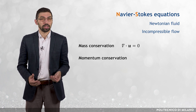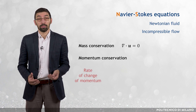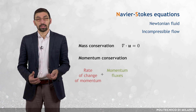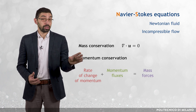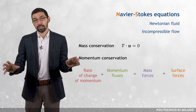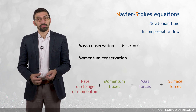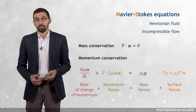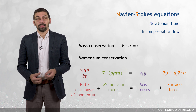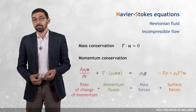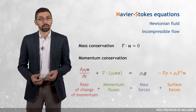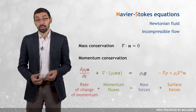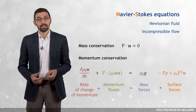The momentum conservation equation states that the time rate of change of momentum of a small fluid element plus the momentum fluxes through its faces are balanced by the forces acting on it, which divide into mass forces — in practice the gravitational force — and surface forces. The equation can be written as: ∂(ρ_f U)/∂t + ∇·(ρ_f UU) = ρ_f g − ∇p + μ_f ∇²U. When resolved numerically, the Navier-Stokes equations provide the instantaneous velocity and pressure at a finite set of space points and time instants.